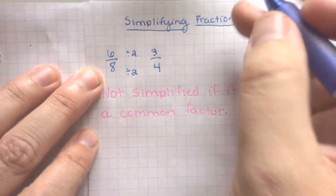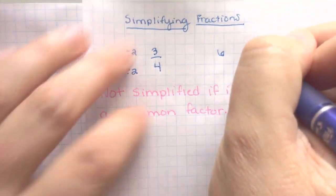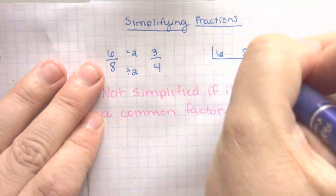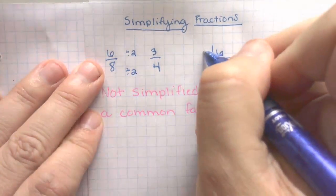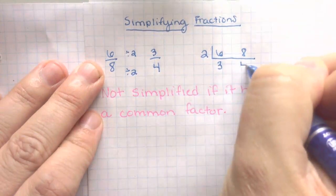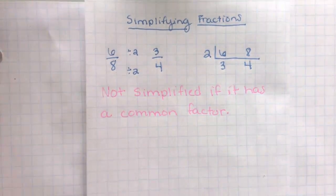Or if they're bigger numbers and you want to go ahead and use that ladder method, you sure can. So you'll put them in the ladder. You'll pull out the prime number 2. And you'll still get 3 over 4. And that becomes your numerator and your denominator.